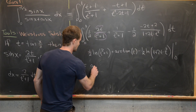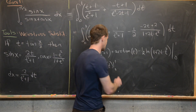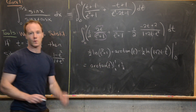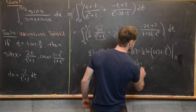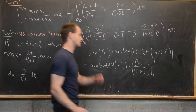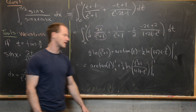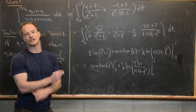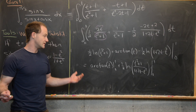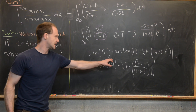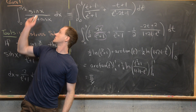This gives arctan(t) evaluated from 0 to 1, plus one half times ln of (t squared plus 1) over (1 plus 2t minus t squared), evaluated from 0 to 1. Plugging in t equals 1 gives 2 over 2 inside the log, so ln(1) equals 0. Plugging in t equals 0 gives 1 over 1 inside the log, so ln(1) equals 0 again. Arctan(1) equals pi over 4 and arctan(0) equals 0, so the solution is pi over 4.